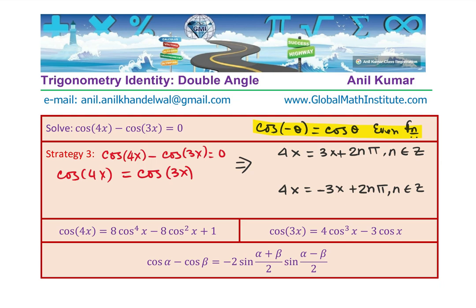You get your answers as we did earlier. 4x minus 3x equals to 2n pi. That means x is equals to 2n pi. We get one set and here we add them. 4x plus 3x equals to 2n pi, which implies 7x equals to 2n pi. And that gives you the set of solutions for x as equal to 2n pi by 7.